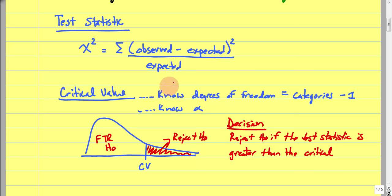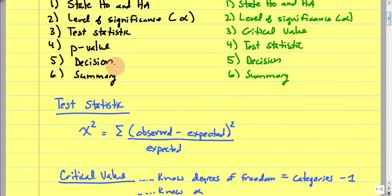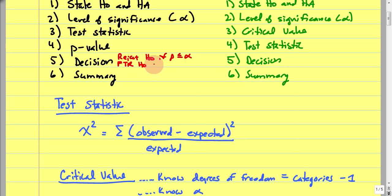When using the p-value approach, we reject H-O if p is less than or equal to alpha, and fail-to-reject H-O if p is greater than alpha. These are the same rules we've always used.